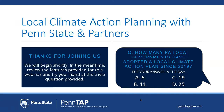Okay, I guess we could go ahead and get started. It looks like two people have answered correctly. The trivia question: how many Pennsylvania local governments have adopted a local climate action plan since the program began in 2019? The correct answer is C. You'll learn more about exactly what a local climate action plan is, what was involved, and how the plans are created and adopted as the presentation unfolds.